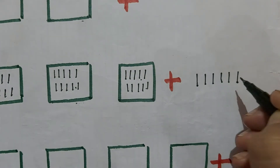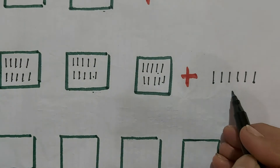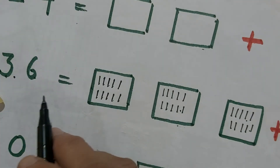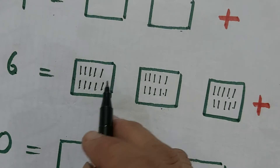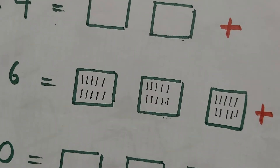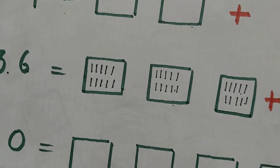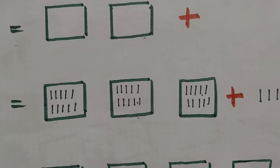If we have numbers from 1 to 9, it will come under ones. If we have numbers from 10 to 20, then it will be under tens or it will be called a bundle of 10.